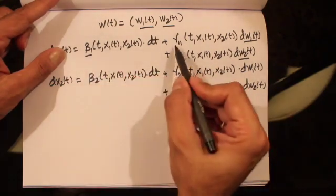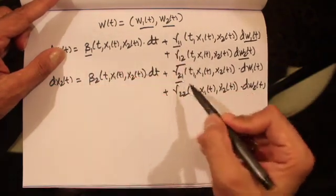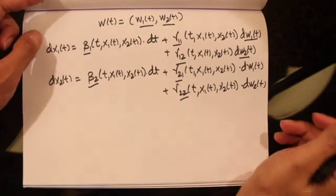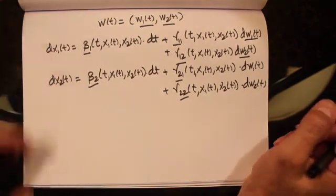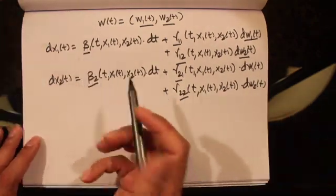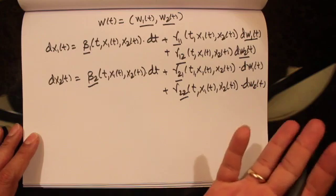Now beta1, gamma11, gamma12, gamma21, gamma22, and beta2 are basically non-random functions of time and two variables, x1 and x2.